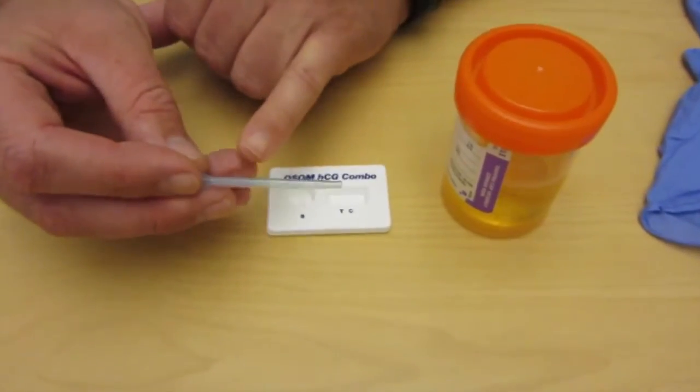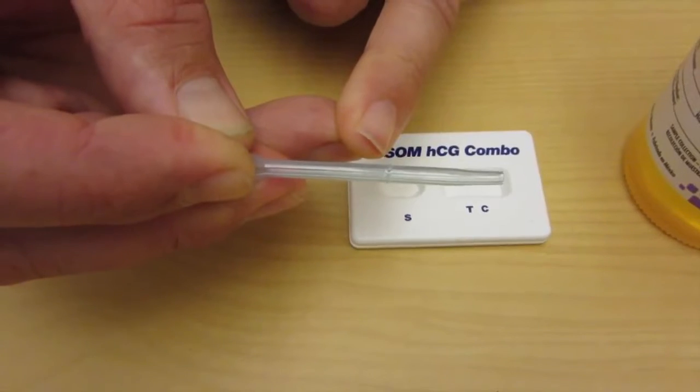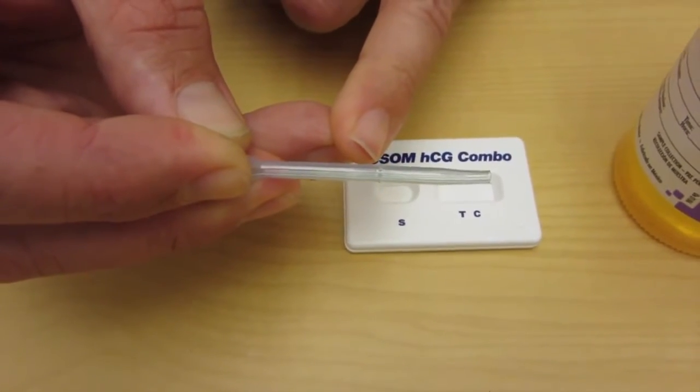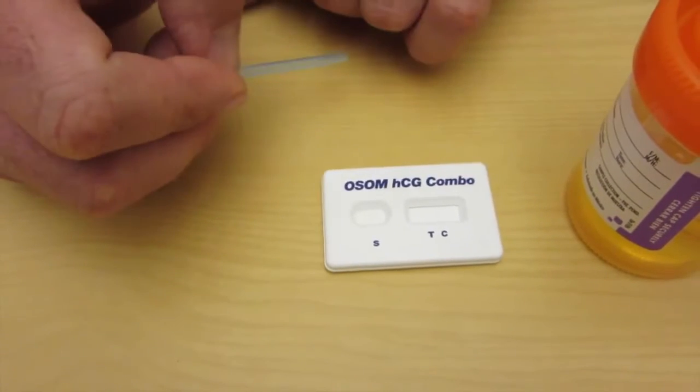And take a look at this pipette. Hopefully you can see this, but there's a small hash mark right there. Basically that's your fill line. So when you dip your urine, you're going to fill up to this hash mark and then you're going to introduce that into the sample well. Then you're going to wait for three minutes to see what your result is.